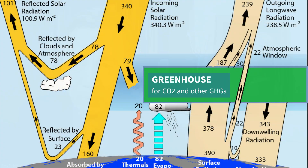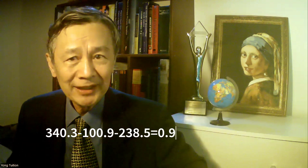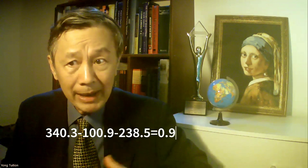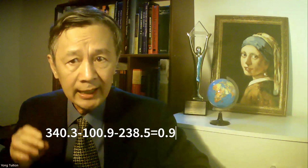That's what Earth should be. But wait — how about those tiny numbers with decimals printed next to the cash flows? Incoming solar cash flow 340.3, reflected solar cash flow 100.9, minus outgoing longwave radiation 238.5. In this way he obtains a net cash flow of 0.9 W/m². This is the imagined — or in his own word, by design — greenhouse effect, namely the Earth's Energy Imbalance, EEI, at the top of atmosphere he wanted. I call it imagined because such a small positive EEI has never been measured.